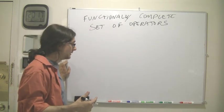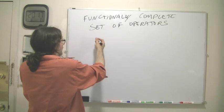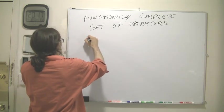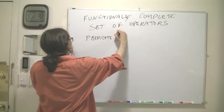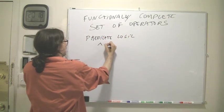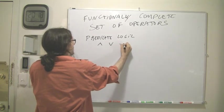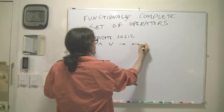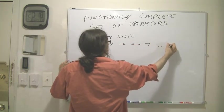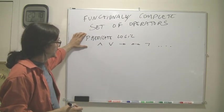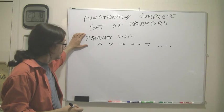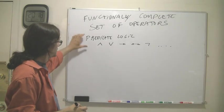Predicate logic is an instance of a Boolean algebra. So we have in predicate logic operators like and, or, implication, biconditional, not, and so on. And we use these operators to write expressions in predicate logic, or equivalently in Boolean algebra.